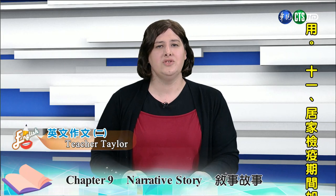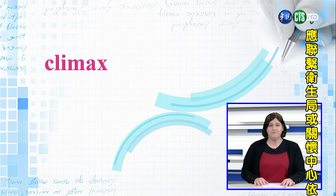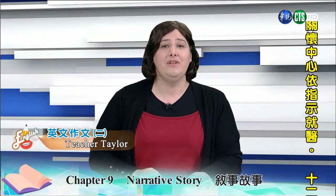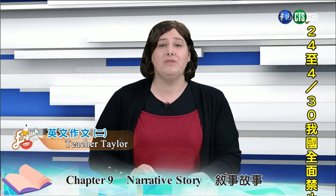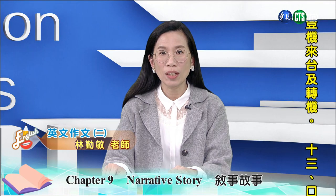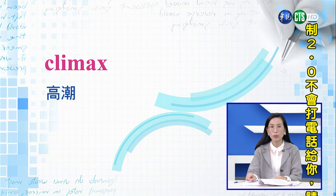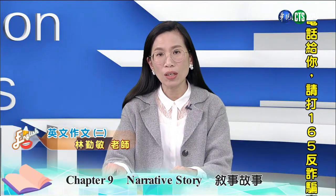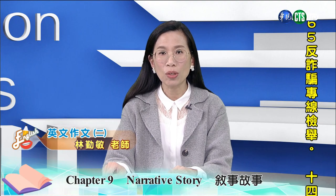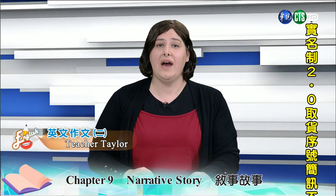Before we move on to the conclusion, you need to know that the climax of the story should be in the last body paragraph of the story. The story and the action should build up to something. In the model writing, we know that the climax will most likely be when they reach the top of the peak to which they are traveling. 那在写结论之前呢,我们需要知道的是故事的climax就是它的高潮应该出现在哪里呢?在这个内文段落的最后。我们在写故事的时候呢一定要有个高潮。在范例中呢,我们知道高潮的最后也就是他们到达这个峰顶的时候。